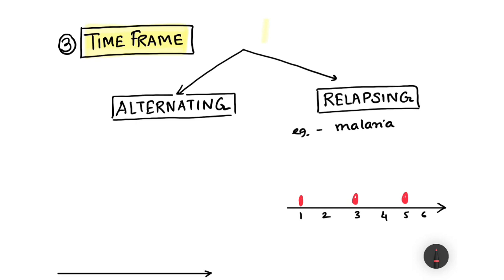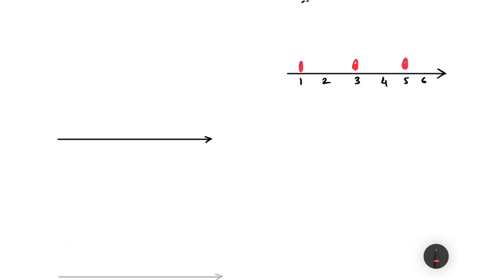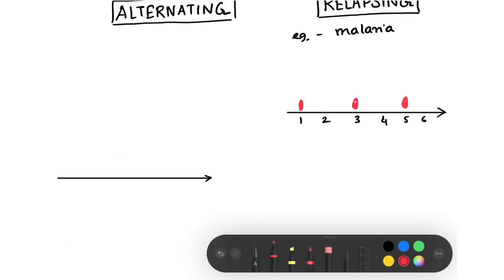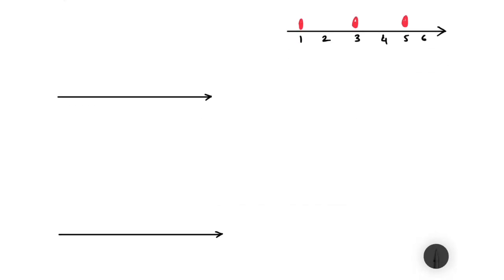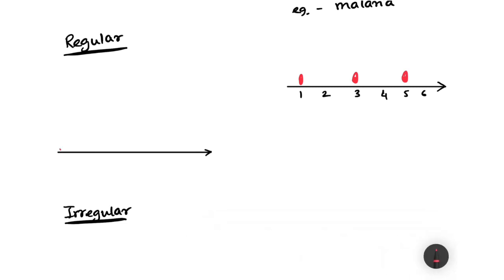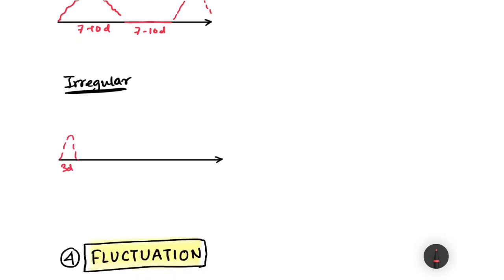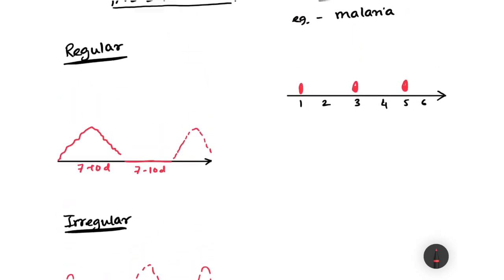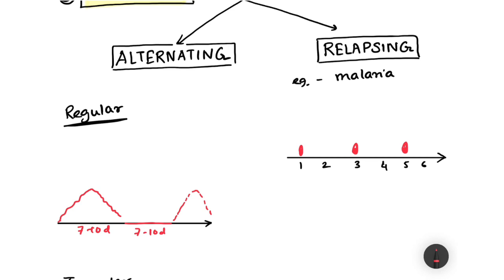Alternating fever is similar to relapsing but on a greater time scale — in the scale of weeks or months rather than days. There can be regular alternation or irregular alternation. In regular alternation, the fever rises and falls over seven to ten days, then no fever for another seven to ten days, then rises again in a regular pattern. In irregular alternation, the pattern is inconsistent — fever for three days, gap of ten days, fever for six days, gap of two days, and so on.